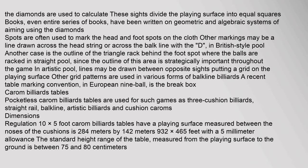The diamonds are used to calculate shots and divide the playing surface into equal squares. Books — even entire series of books — have been written on geometric and algebraic systems of aiming using the diamonds. Spots are often used to mark the head and foot spots on the cloth. Other markings may include a line drawn across the head string or across the baulk line with the D. In British-style pool, another marking is the outline of the triangle rack behind the foot spot. In artistic pool, lines may be drawn between opposite sites, putting a grid on the playing surface. A recent table marking convention in European 9-ball is the break box.